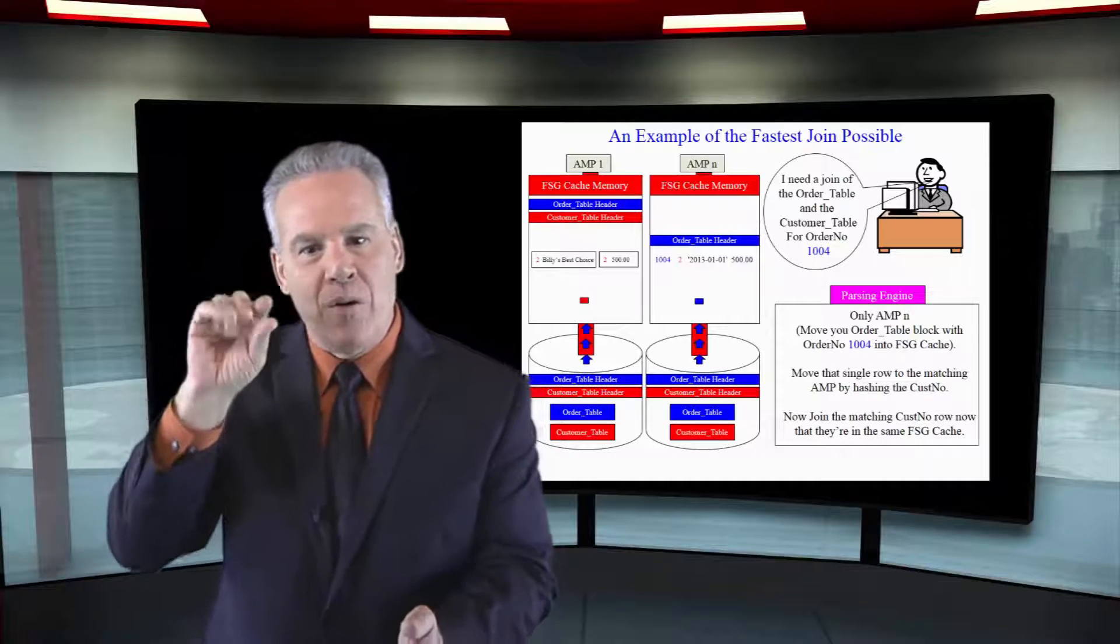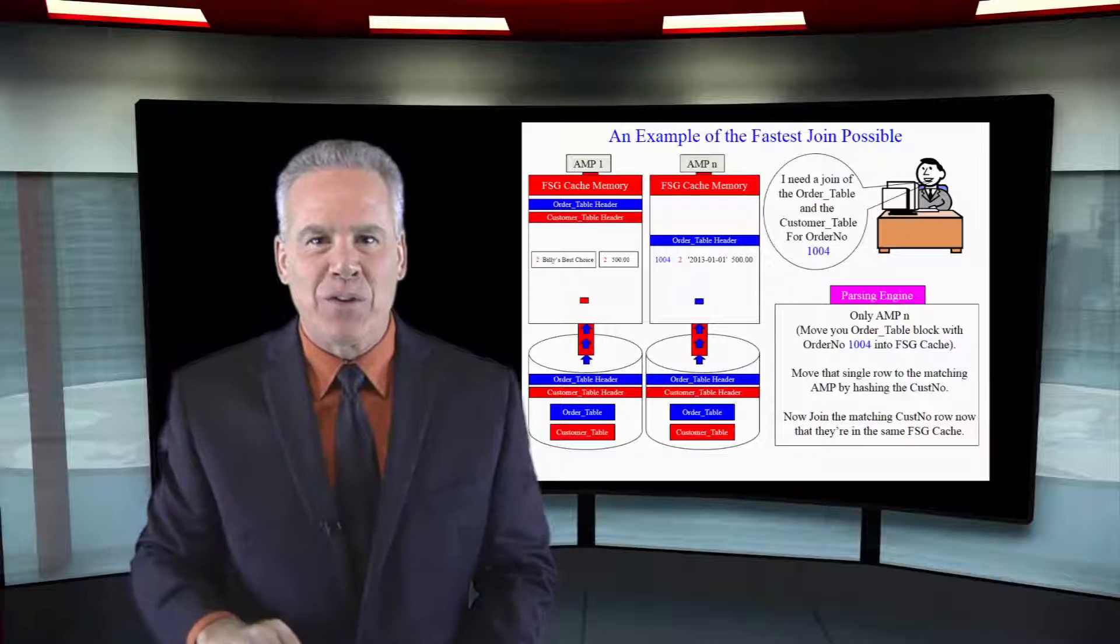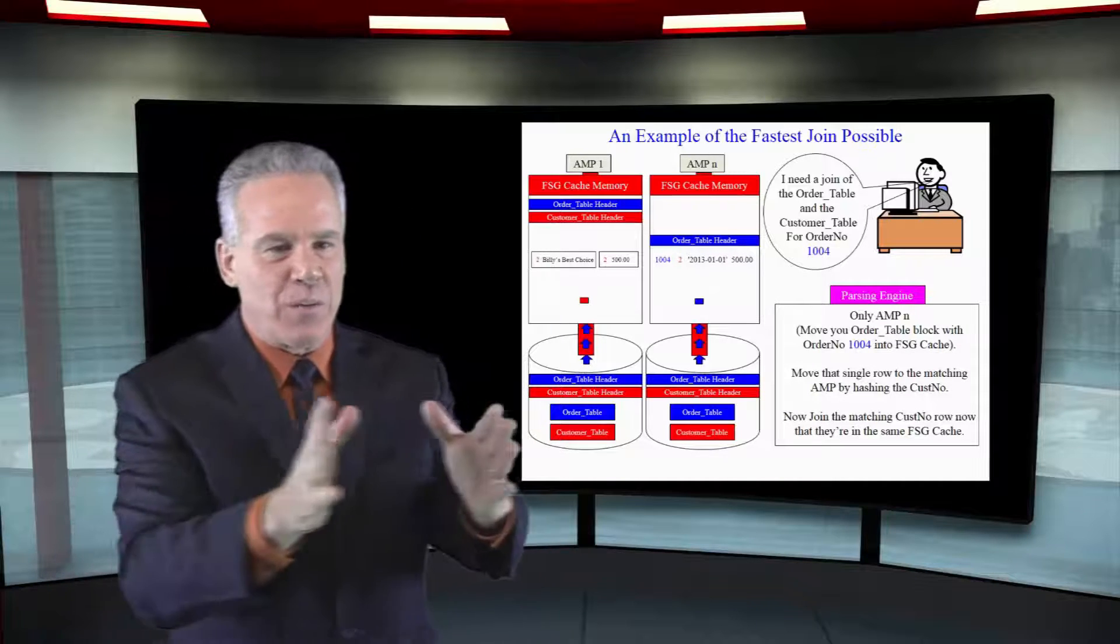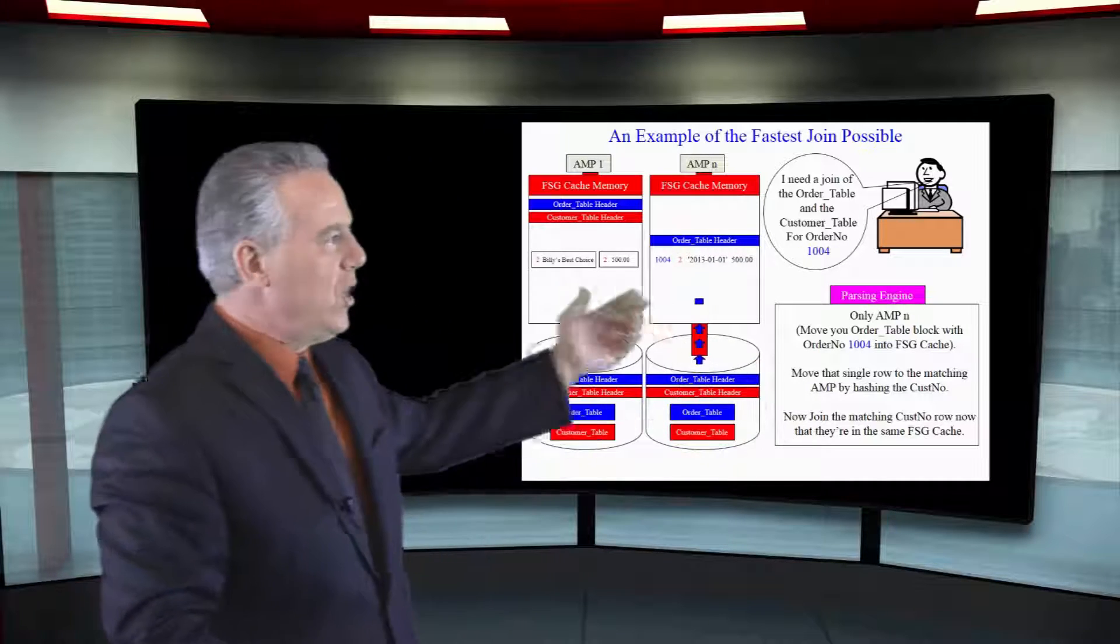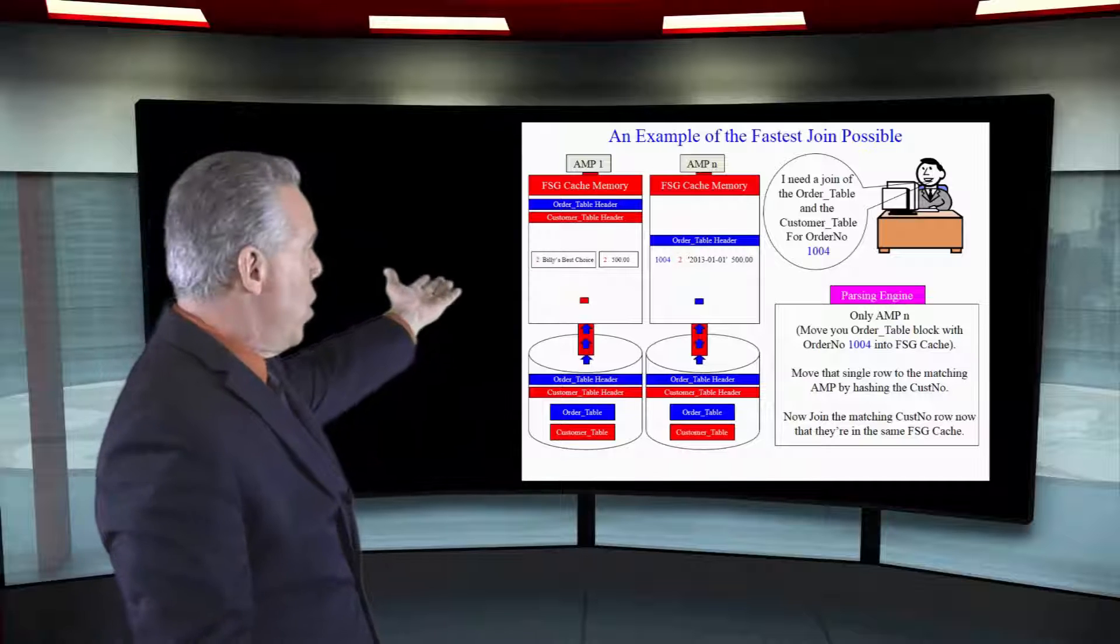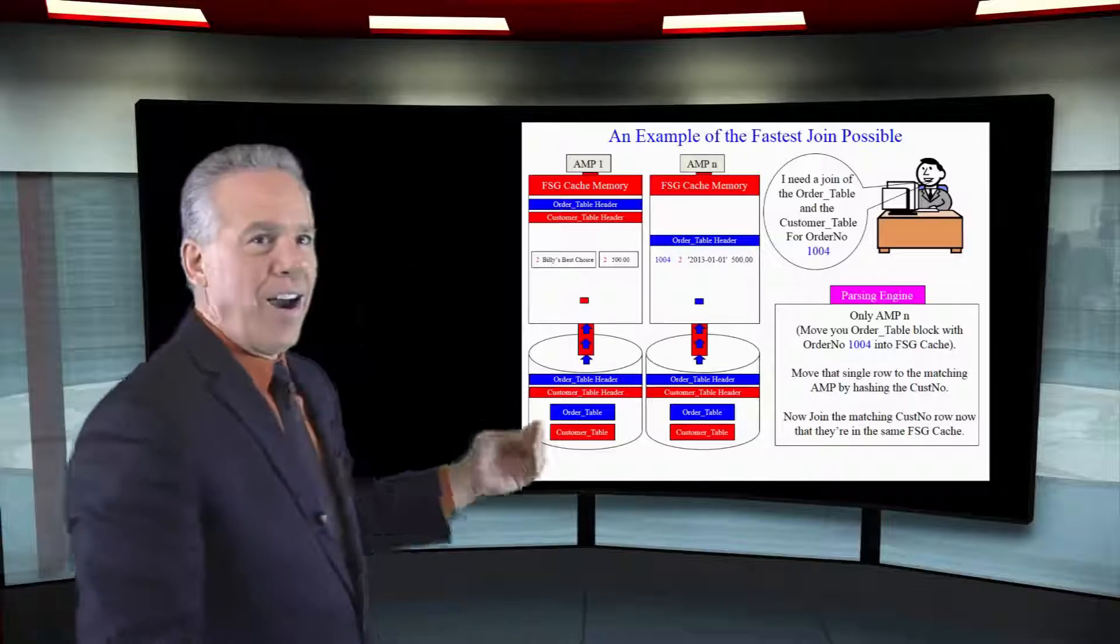Redistribute that row hashing customer number two and bring it over to the proper amp. And now as you can see, the matching rows are joined together on amp one.